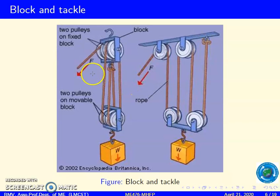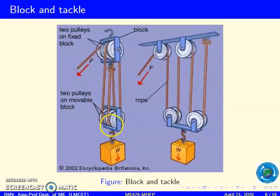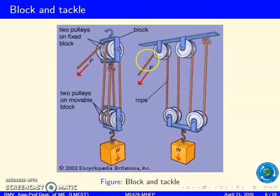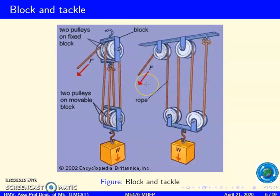This figure shows the block and tackle arrangement. You can see two pulleys on the fixed block and two pulleys on the mobile block. One pulley from the fixed and one from the mobile forming a pair. And when force is supplied at this end, the weight will be lifted. This uses the principle of mechanical advantage.